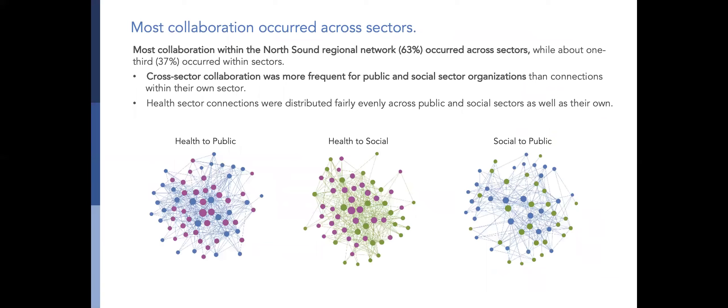We were happy to see that most collaboration occurs across sectors. Nearly two-thirds of connections were cross-sector with just over one-third of connections within sector. Public and social sector organizations had more cross-sector connections than within-sector connections, while the health sector had connections evenly distributed between cross-sector and within-sector organizations.